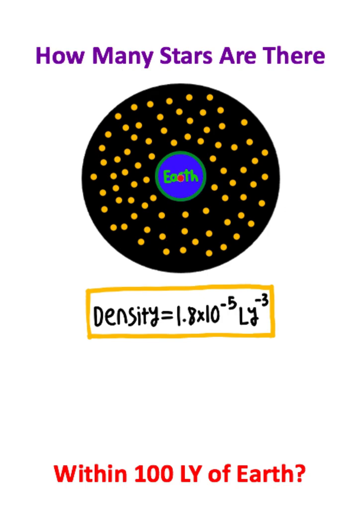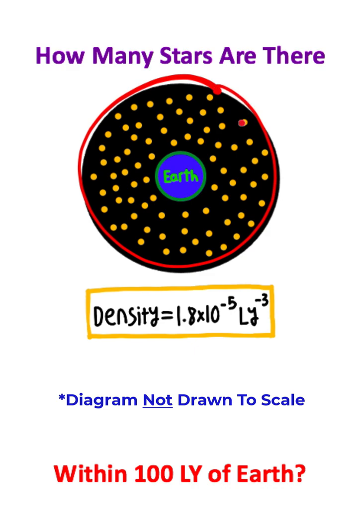If we assume Earth to be the center of this space which we're measuring, this space can be approximated to be a sphere where the radius is one hundred light years.